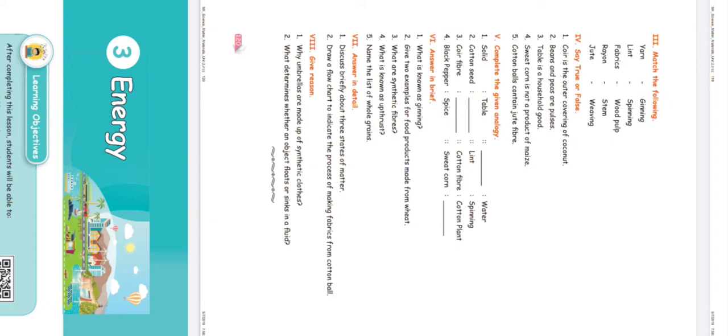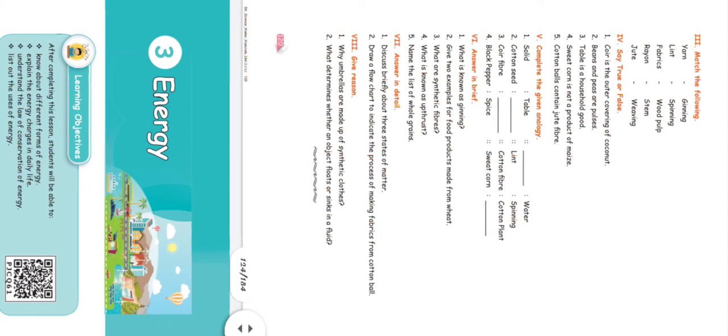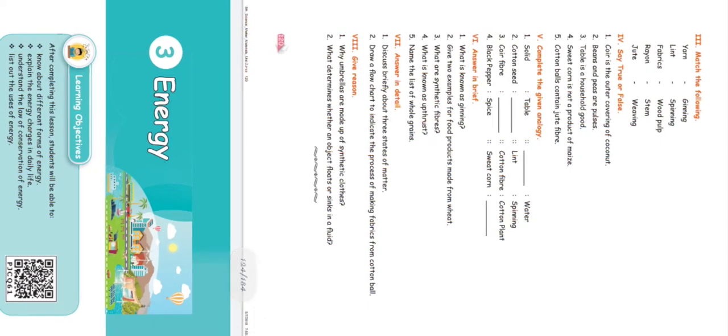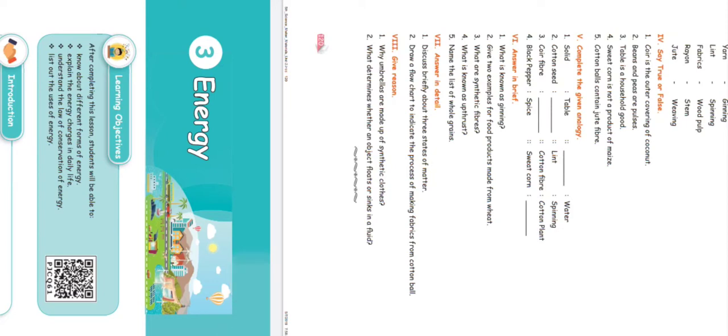Coir fiber — blank — cotton fiber: cotton plant. So the answer is cotton plant. Black pepper: spice — sweet corn: the answer is sweet. So the right answer is sweet.